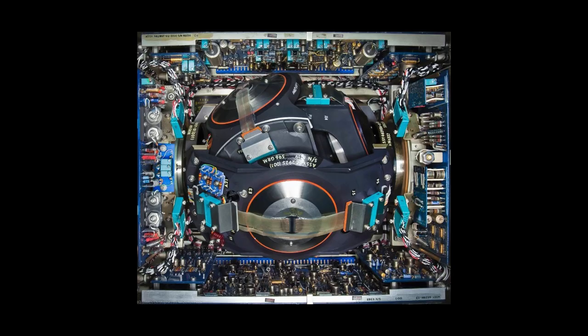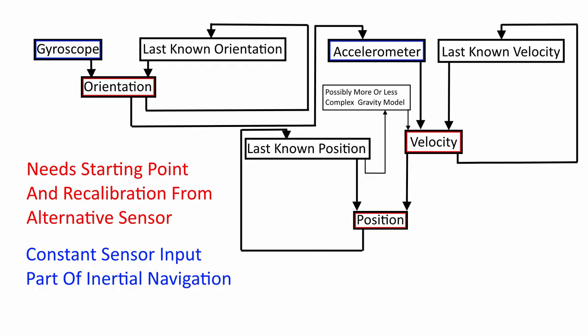And the basic principle is that you take things that you can actually physically measure, like rotation and acceleration, and then extrapolate your entire movements based on a calibrated starting point.